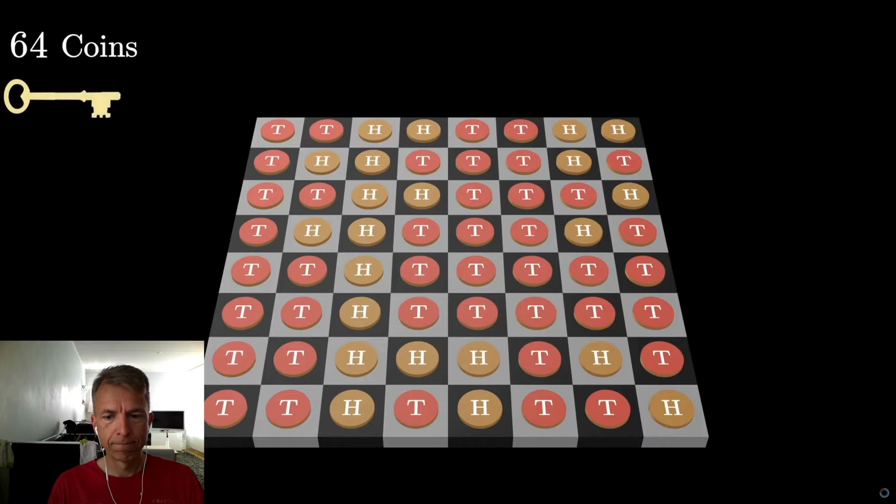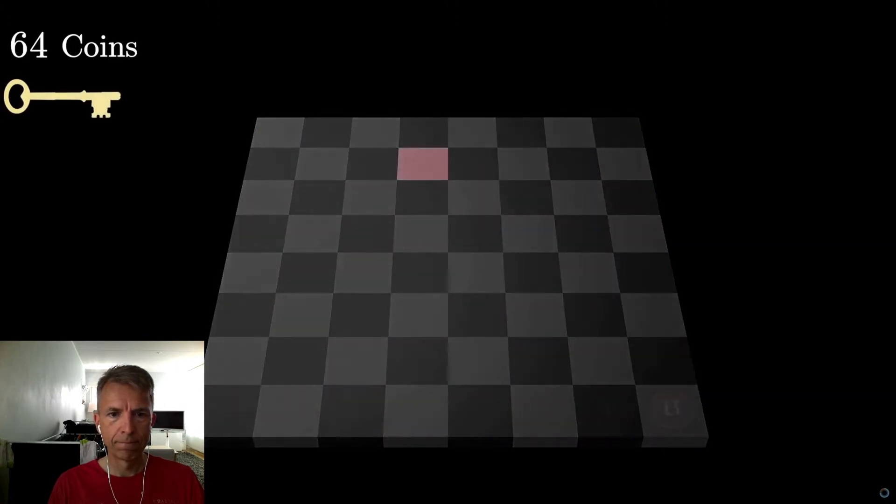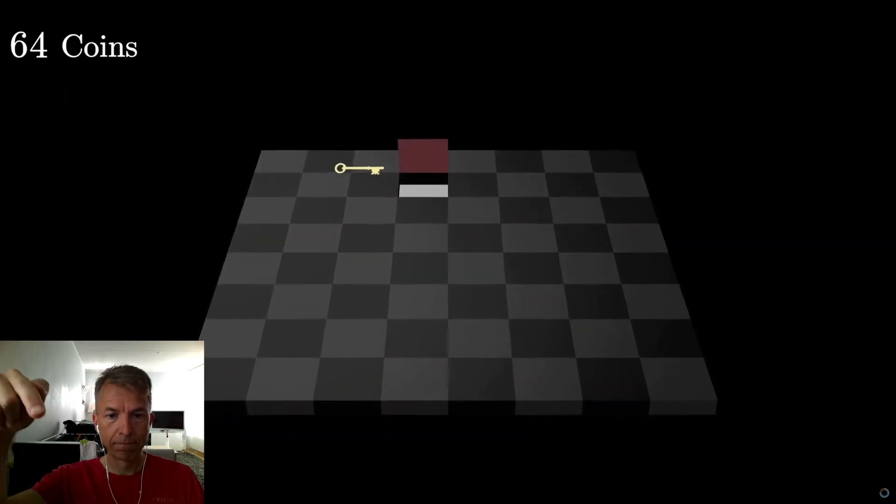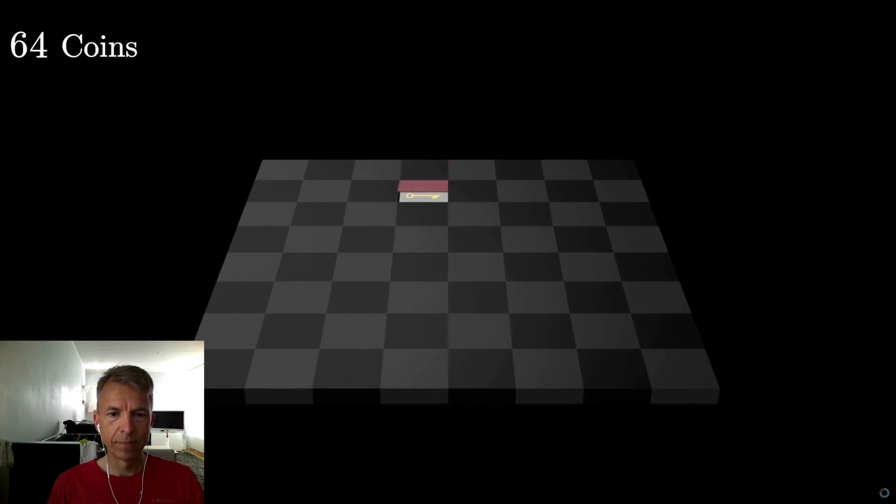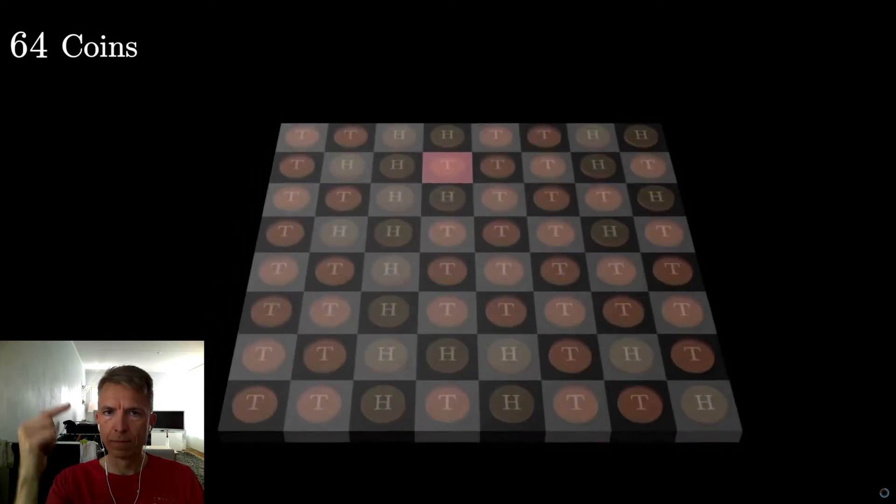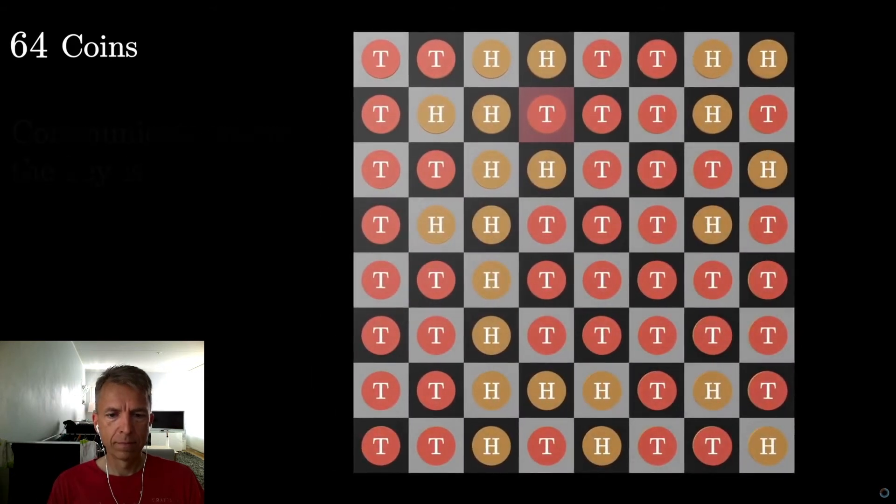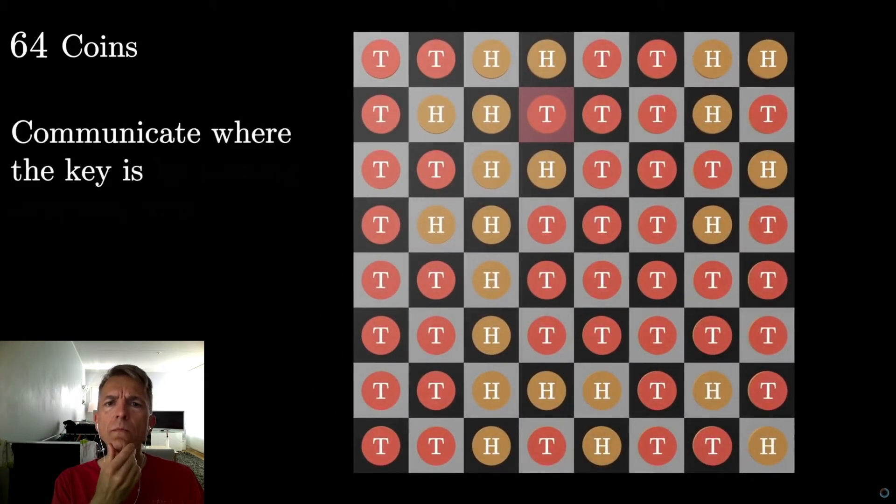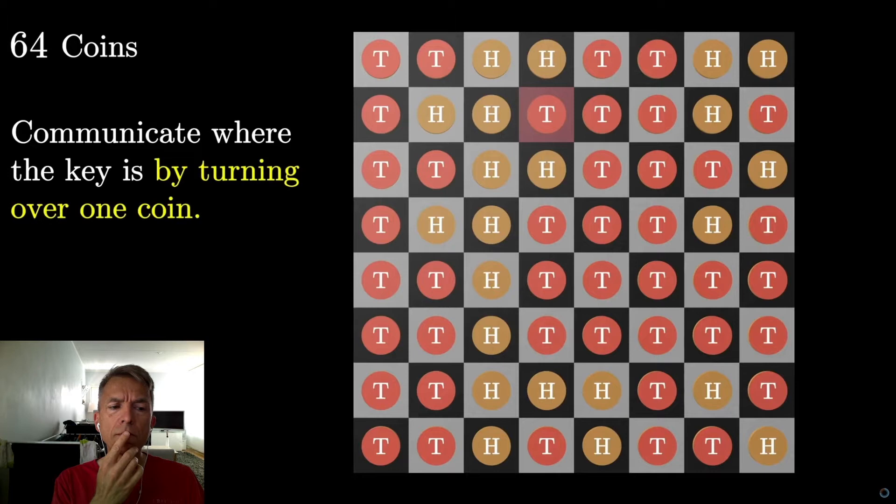And then they show you a key. They put that key inside one of the chessboard squares. So you know where the key is. And the goal is going to be to get prisoner number two to also know where the key is. But the only thing that the warden allows you to do before you leave the room is to turn over one and only one of these coins.